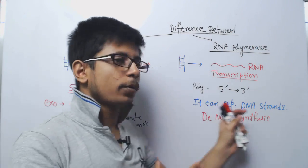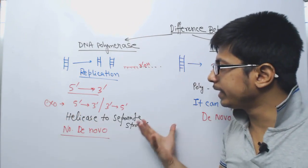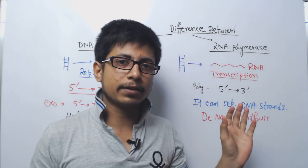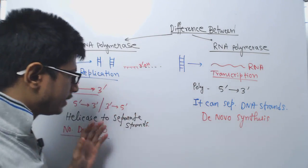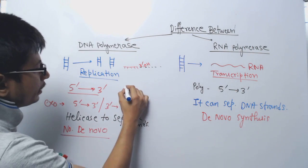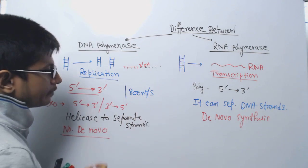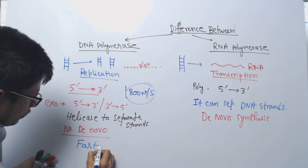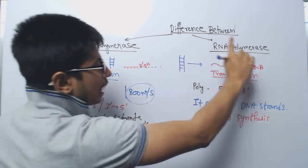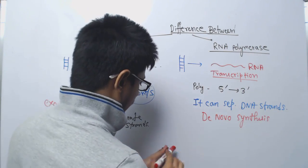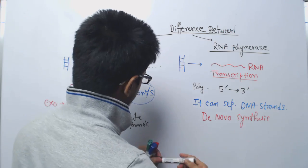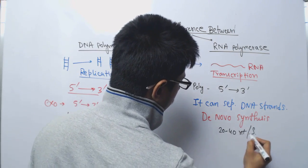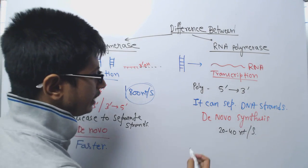Another important difference is processivity. DNA polymerase is really fast — it can add up to 800 nucleotide sequences per second. On the other hand, RNA polymerase can add only 20 to 40 nucleotide sequences per second, so it is considerably slower.